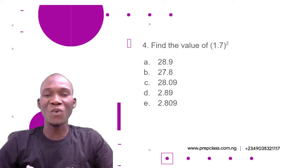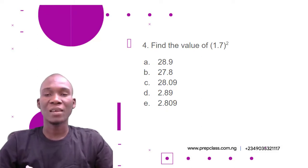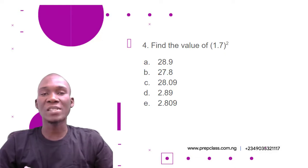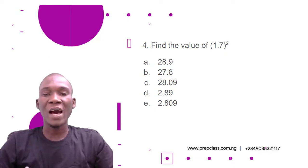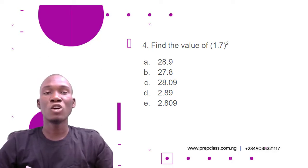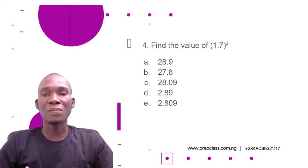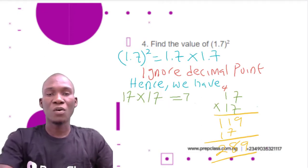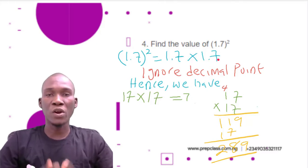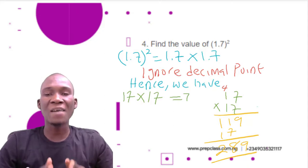Now let's move to the next question. Question number four: find the value of (1.7)². That means you have to multiply 1.7 by 1.7. The options are: A) 28.9; B) 27.8; C) 28.09; D) 2.89; E) 2.809. Since 1.7 raised to the power of 2 means 1.7 multiplied by itself, we have 1.7 × 1.7.